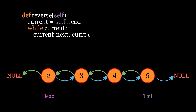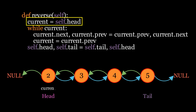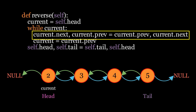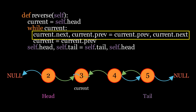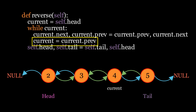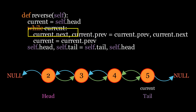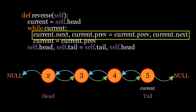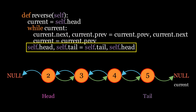Reversing a doubly linked list is simpler than reversing a singly linked list. Define the function for reversing the list. Create a pointer called current, initially set to the head. While current is not None, swap the next and previous pointers of current, then update current to its previous node. Note that due to the swapping, what was previously the next pointer is now the previous pointer. This continues until current becomes None. After the loop breaks, swap the head and tail pointers to complete the reversal.